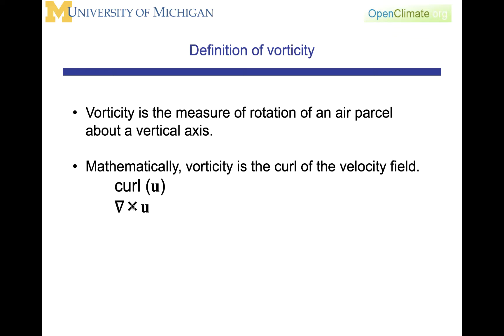The curl of U, or del cross U, is the more common notation, where U is the velocity vector. Vorticity is a vector.